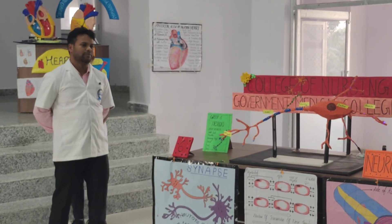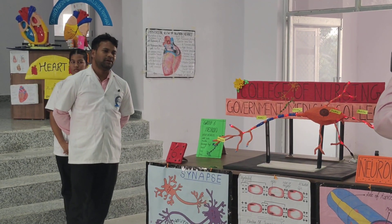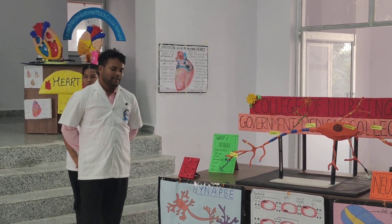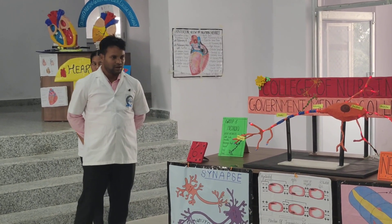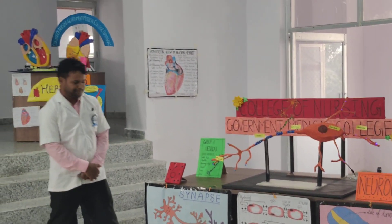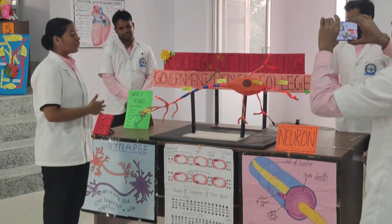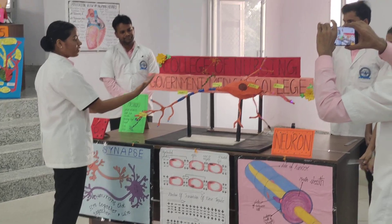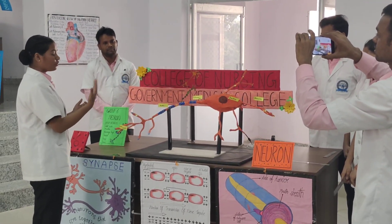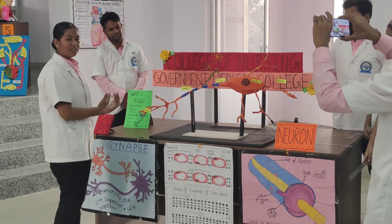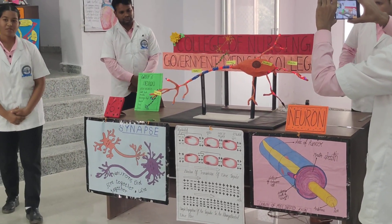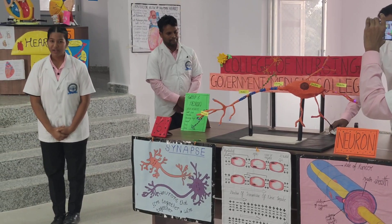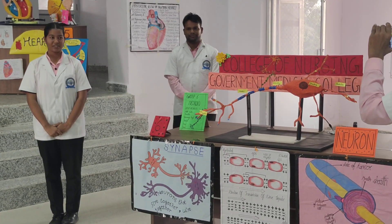The epineurium is the fibrous tissue which surrounds and encloses the nerve and the whole nerve system. This is the path from the cell body through the axon to the synaptic knob. Thank you. Have a nice day.